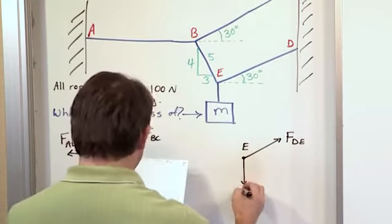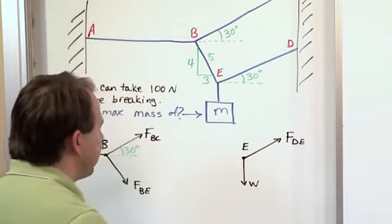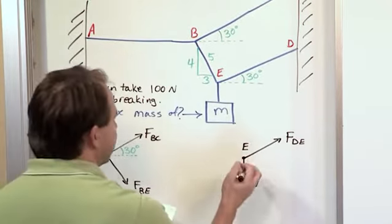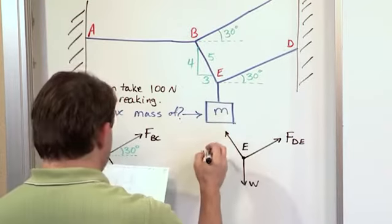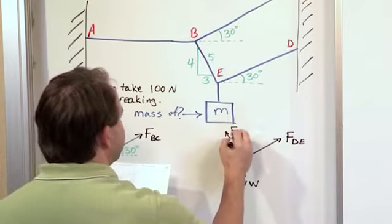And then we have the weight, of course, coming down. We don't know what that is, but that's what we're solving for. And then we have a force going off this direction, which is from this guy right here. We'll try to make that a little bit steeper. We'll call that FBE.